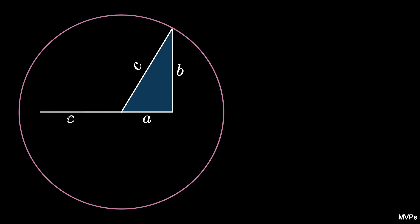Extend the leg labeled A to a full diameter by adding the radius of length C and a segment of length C minus A.